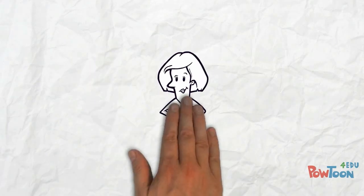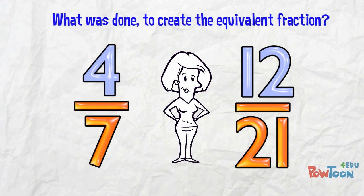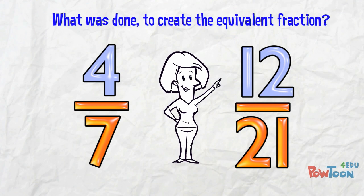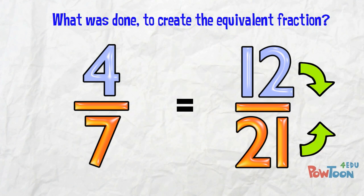To start off, let's take a fraction and an equivalent fraction. You have to work out what was done here to create this equivalent fraction. We can see the equivalent fraction has greater numbers. That tells us that the original fraction was multiplied by some number to get the new fraction.